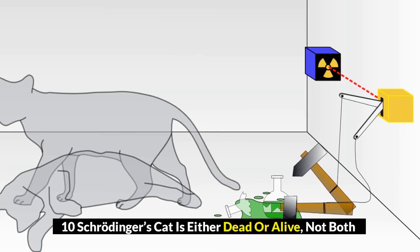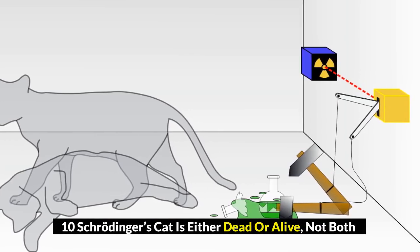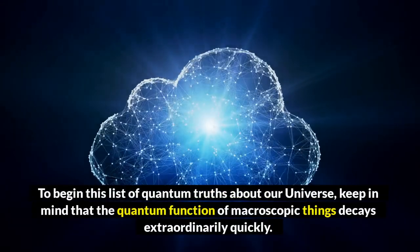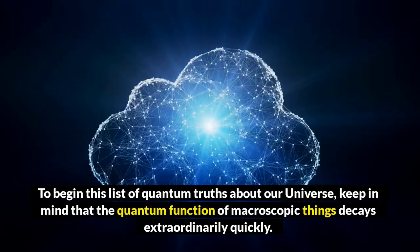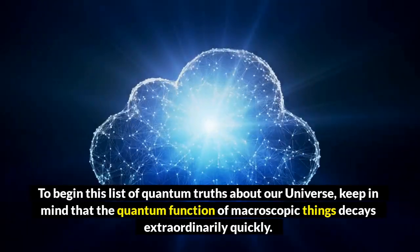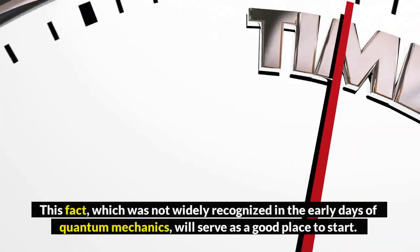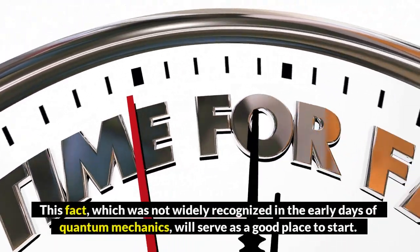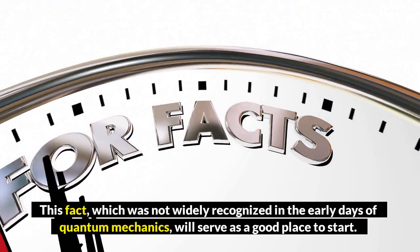10. Schrodinger's cat is either dead or alive, not both. To begin this list of quantum truths about our universe, keep in mind that the quantum function of macroscopic things decays extraordinarily quickly. This fact, which was not widely recognized in the early days of quantum mechanics, will serve as a good place to start.